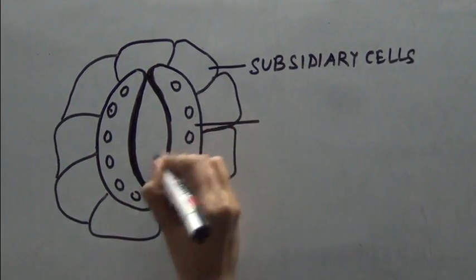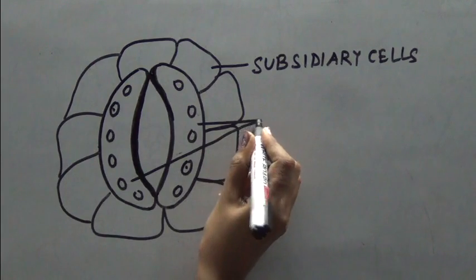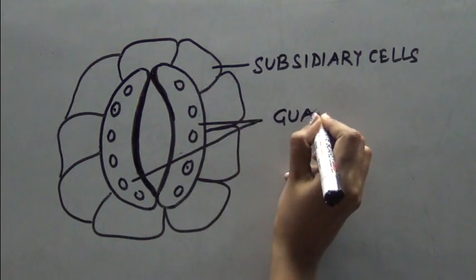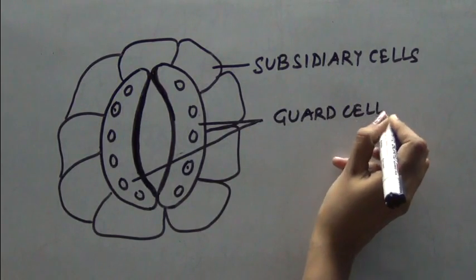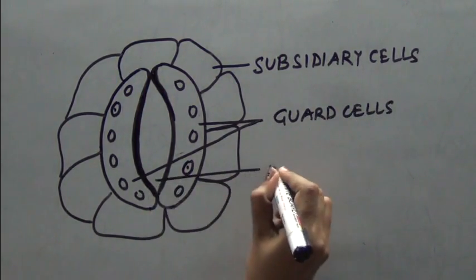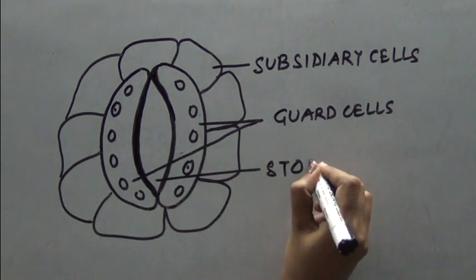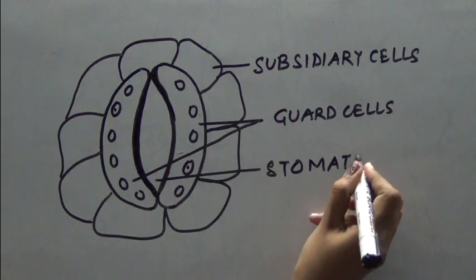These two are the guard cells. And this gap is known as the stomata, stoma or the stomatal aperture.